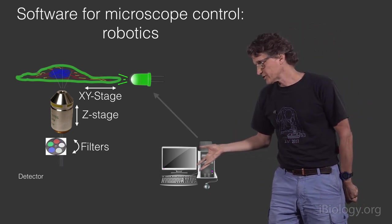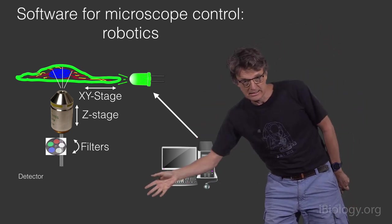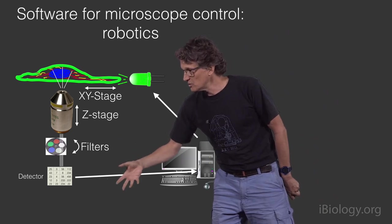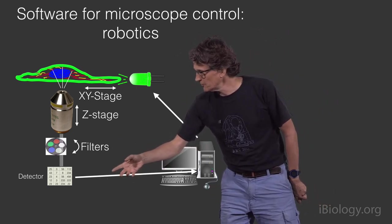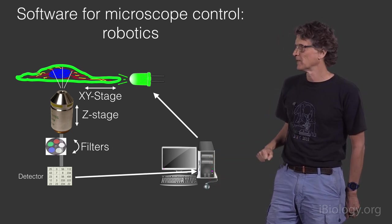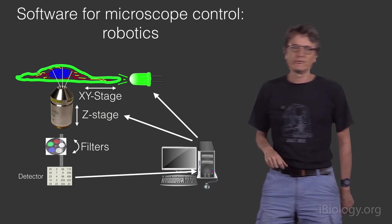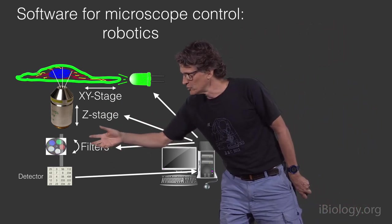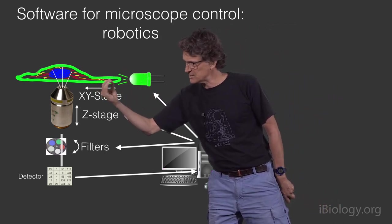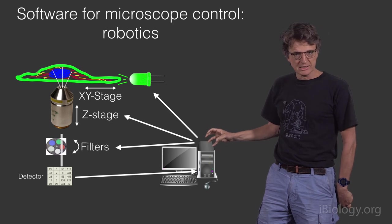For instance, you will want the software to switch on a light source to start illuminating the sample. At that point, your detector can start collecting the data. Once that collection is finished, you want the software to transfer those numbers into the computer's memory. The software will also move a Z stage to take a through focus series, change filters, change illumination, move the XY stage to take images at different positions. The robotics is an important part, but I'm not going to talk much more about that.